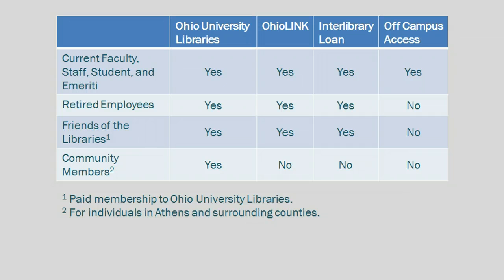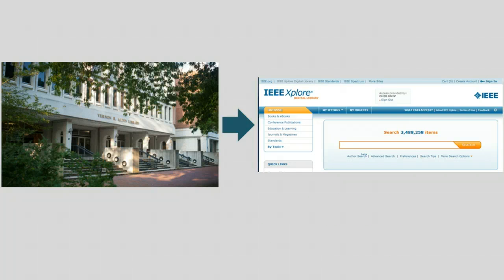If you are no longer affiliated with Ohio University, you no longer have off-campus access to our online resources. When you are on campus, access to our online resources is seamless because we authenticate by IP address.